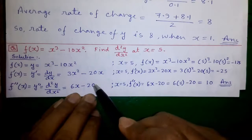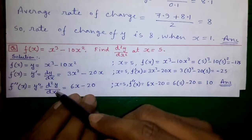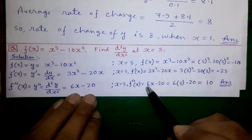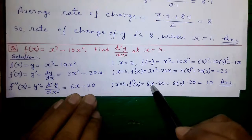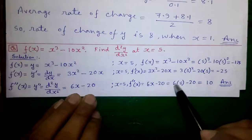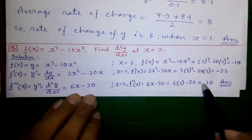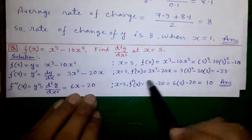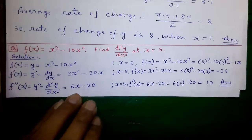Next, putting x equals 5 into d²y/dx², which is 6x minus 20: 6 times 5 minus 20 equals 10. This is our required answer at x equals 5.